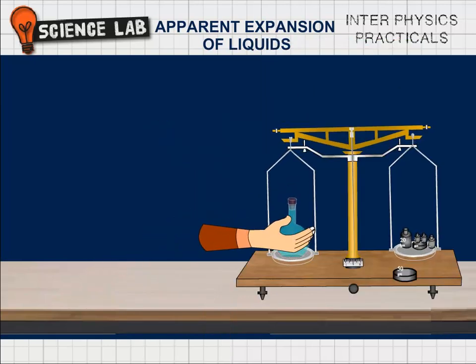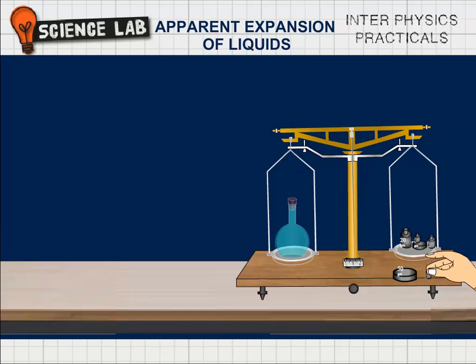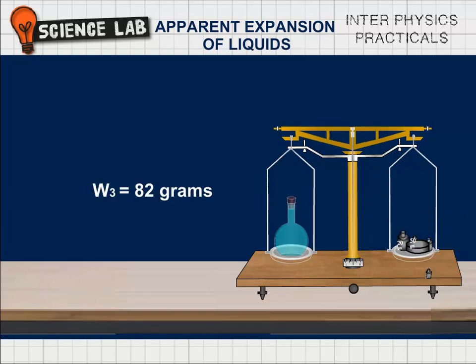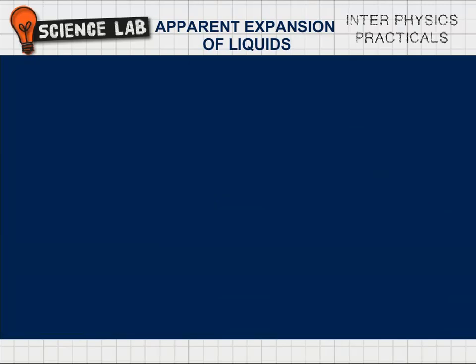Measure the mass of the specific gravity bottle with the remaining liquid W3. Mass of the specific gravity bottle with remaining liquid W3 is 82 grams.